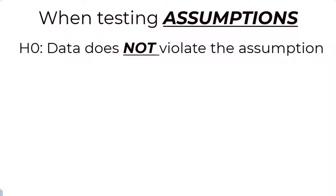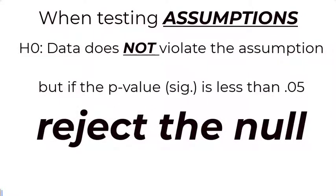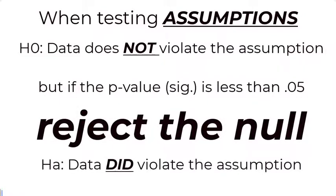So you get to reject that because the p-value is less than 0.05. You reject the null. Therefore, the null becomes the alternative, which is true. The variables did violate the assumption.